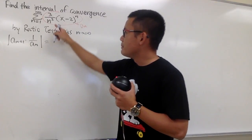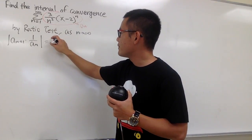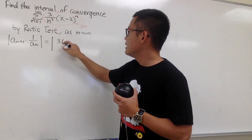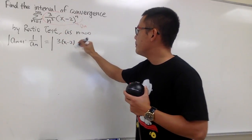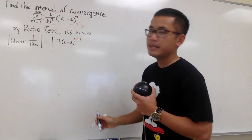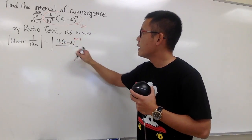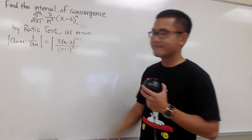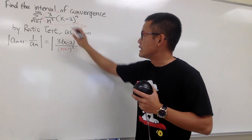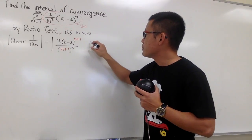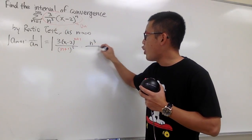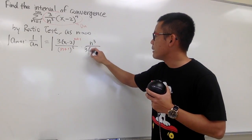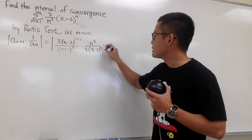For a_{n+1}, plugging n+1 into all the n's, we will have the absolute value. On the top we have 3, and then this is x minus 2 — this n becomes n+1. And then this is over (n+1) to the third power. And we multiply by the reciprocal of that: n to the third power goes on top, over 3 times (x minus 2) to the nth power.